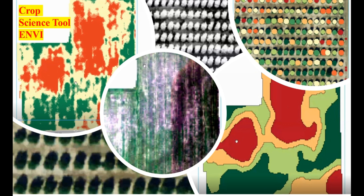Today we are going to start a very interesting lecture on the NV Crop Science tool. This tool is very useful if you want to do precision agriculture. I will show you two demos: one is over horticulture plants — how we can understand which ones are healthy and unhealthy — and the same kind of analysis we will see over agricultural plots.